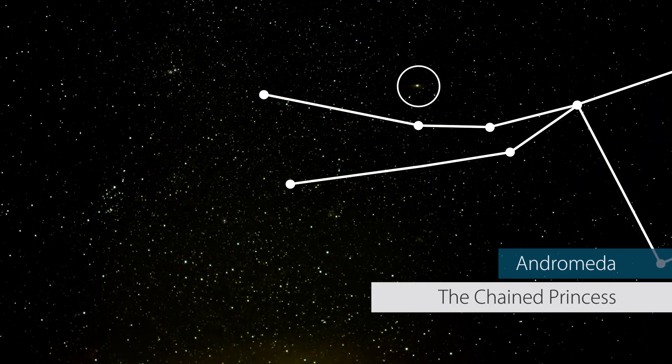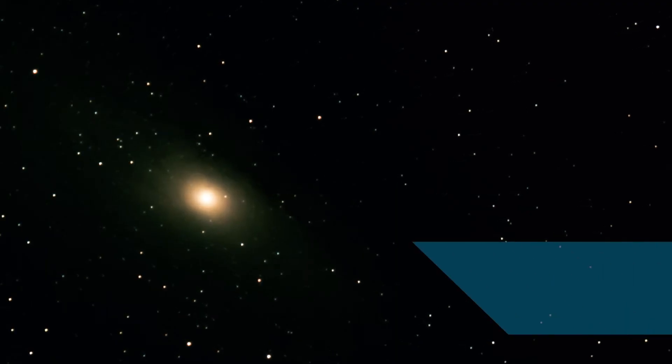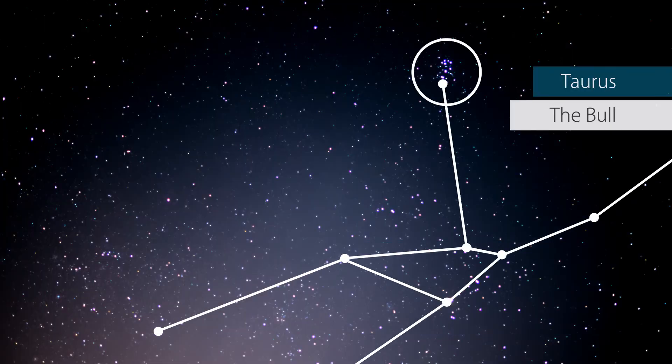You can also see with the naked eye the Andromeda Galaxy as its faint patch of light in the sky, and you can see some of the star clusters like the Pleiades star cluster as well.